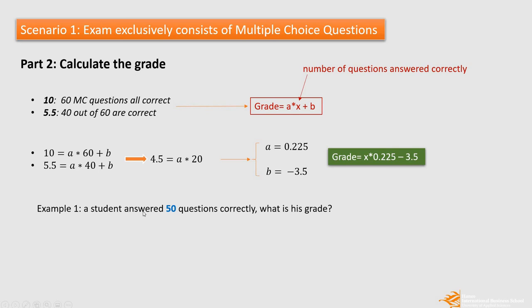Let's look at examples. If I have a student who answered 50 out of 60 questions correctly, what should be his grade? So looking into this equation, X becomes 50 times A. A is 0.225 minus B, and B is minus 3.5. Then we get a number with two digits, 7.75 with two digits in the decimals. And according to IBS assessment policy, we round it down. So the final grade for this student is 7.7.